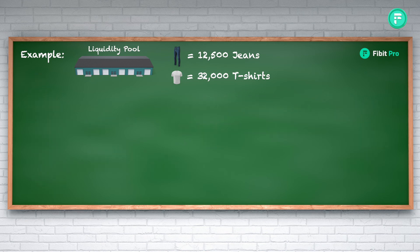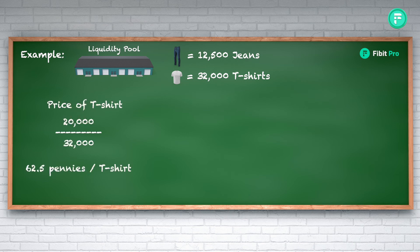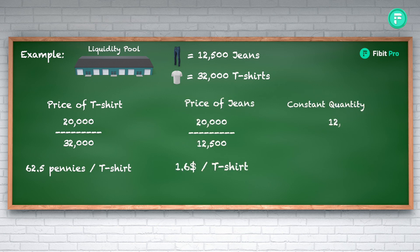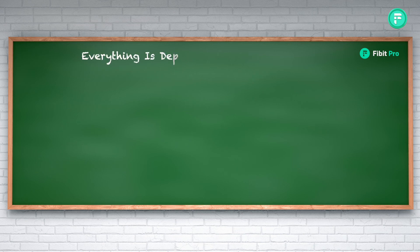Now with 32,000 t-shirts and 12,500 jeans in the pool, the price of a t-shirt decreases to 62.5 cents and the cost of jeans increases to $1.60. Both quantities multiply to 400 million, meaning the constant product is maintained and the algorithm is satisfied. This confirms that everything depends on supply and demand.